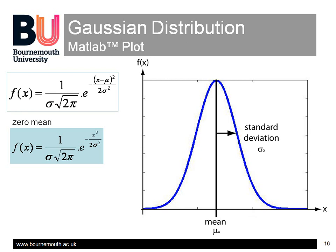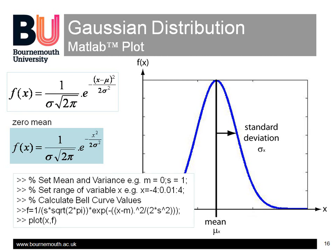This MATLAB code plots the curve for zero mean and unity standard deviation over the range of x from minus 4 to plus 4 in steps of 0.01. One of the characteristics you can see here is that the ends tail off, but don't become zero until infinity. In other words, it's theoretically possible to occasionally get very large positive or negative values of x, which will appear as amplitude spikes in the signal, but it's far more likely for the signal to be close to the mean than anywhere else.